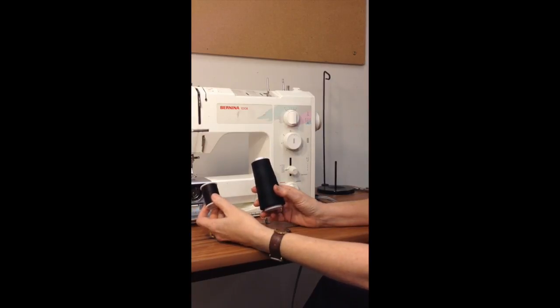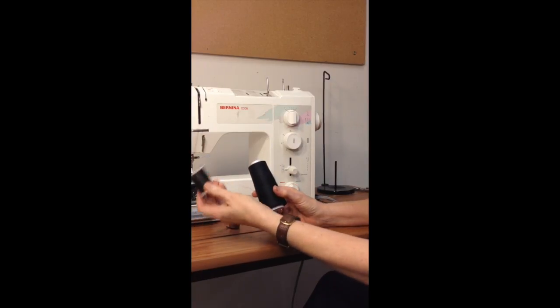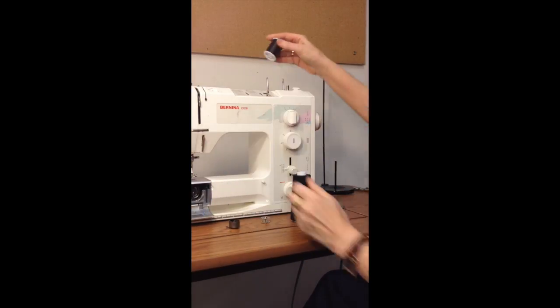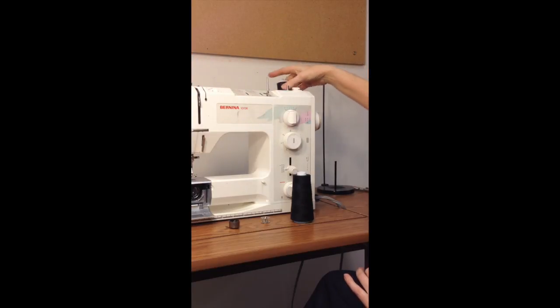There are two styles of thread cones that we use: the smaller lighter weight and then the more industrial heavier. This one fits here and we wind a bobbin with it there and we sew with it there.